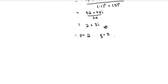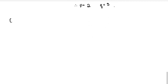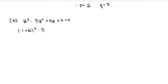Part (b): The equation z³ − 5z² + 16z + k = 0, where k is a real constant, has a root z = 1 + ai where a is a positive real constant. Find the values of a and k. Substitute z = 1 + ai directly and use binomial expansion from your MF26 formula sheet.